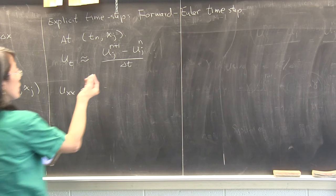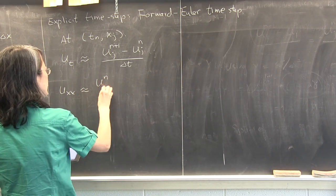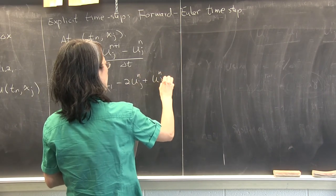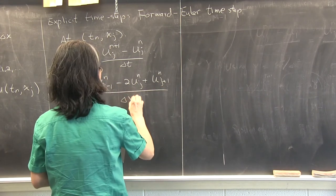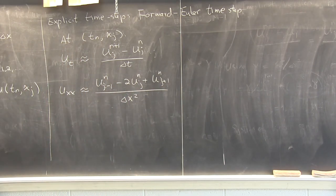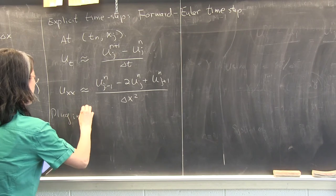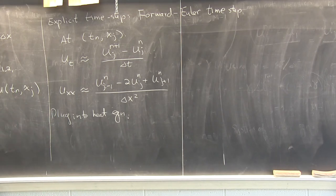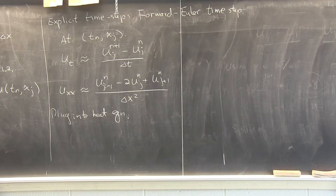In space, we use the normal central finite difference for the second derivative: (U^N_{J-1} - 2U^N_J + U^N_{J+1}) / delta x squared. We plug these two back into the heat equation. There could be a heat conductivity constant, but we normalize it to one — it doesn't change the behavior.